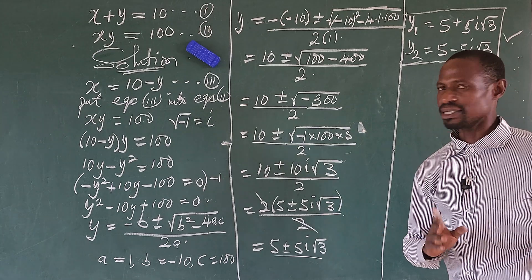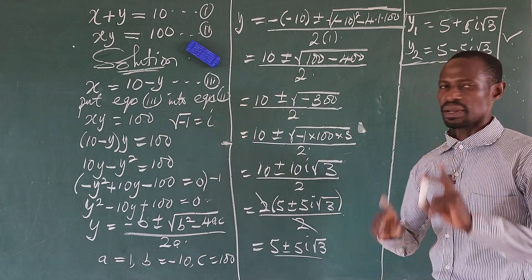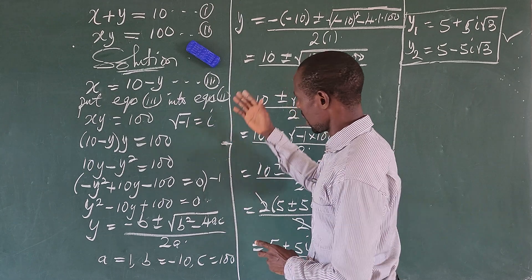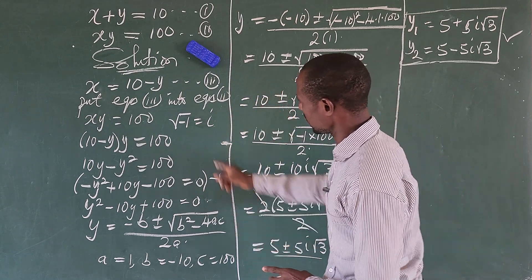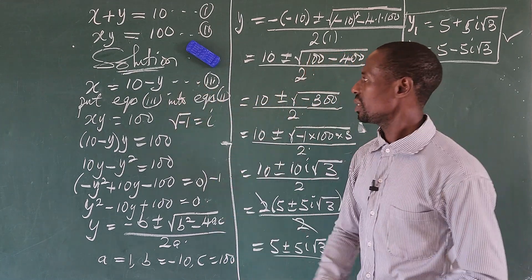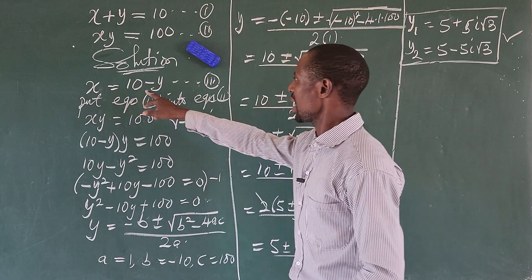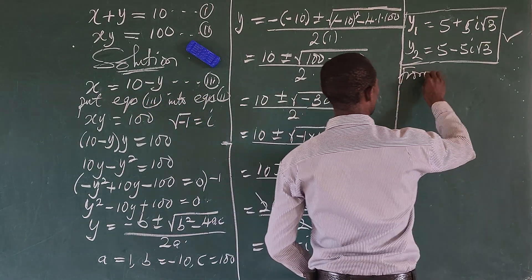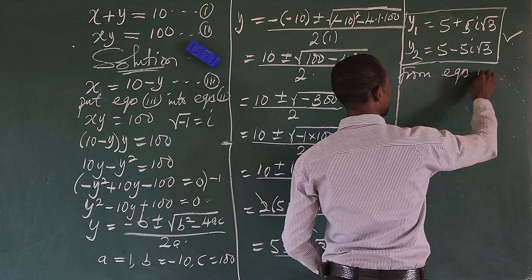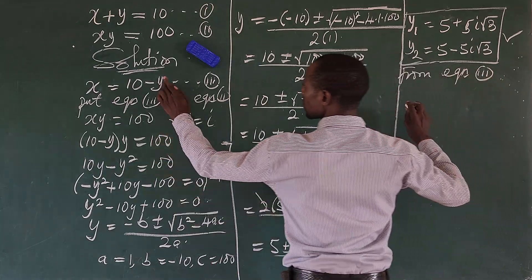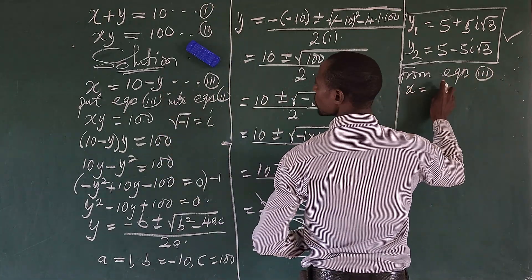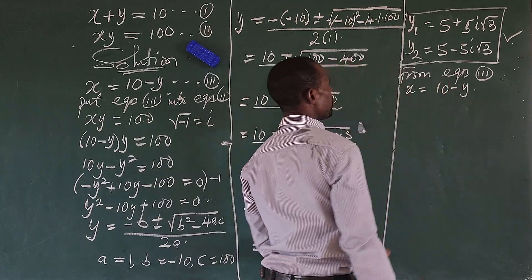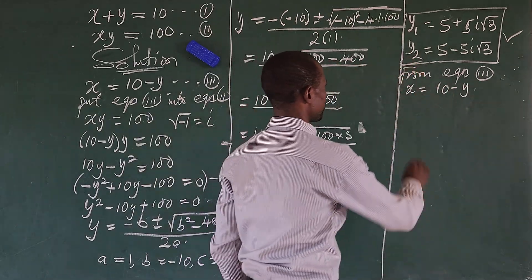Now let's find the values of x. We go back to equation three where we made x the subject of the formula: x equals 10 minus y. We will apply this for both cases.